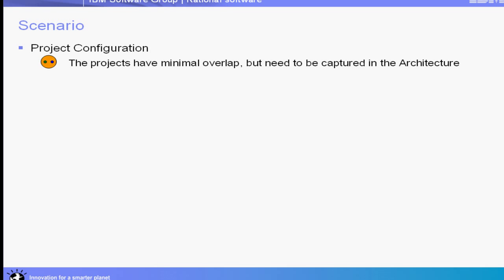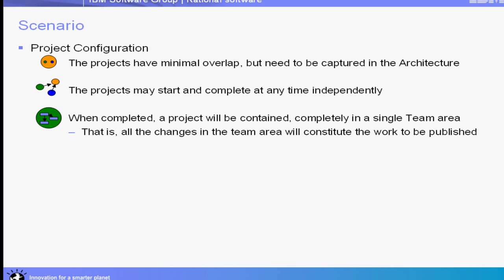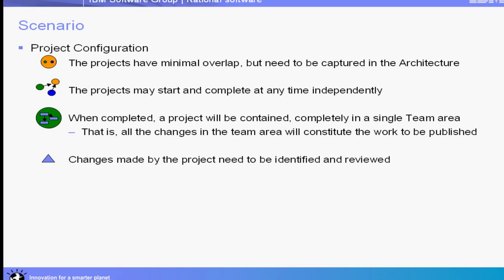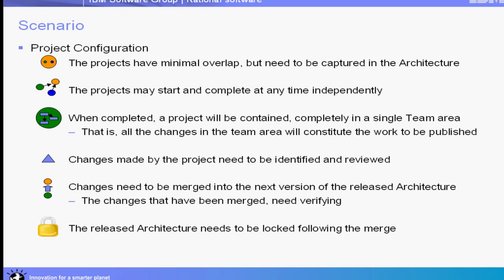Now let's take a look at the project configuration. The projects in this scenario will have minimal overlap. Projects can start and finish at different times, and when a project is complete, all of the changes for that project will be contained in a single team work area. When a project is ready for publication, the changes will need to be reviewed. This will require identifying the changes as well as being able to see what changed. The changes will then require merging into the next version of the architecture.